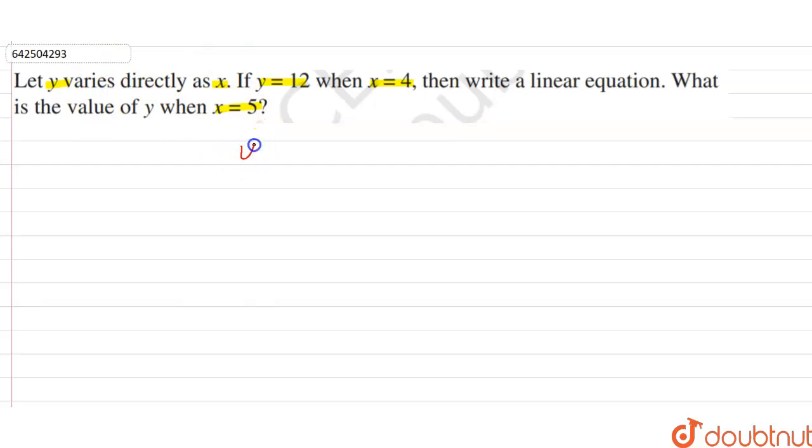So firstly it is given that y varies directly as x. So therefore to remove this direct proportionate sign, we can write y is equal to kx where k is some constant.